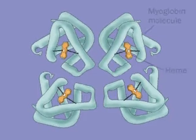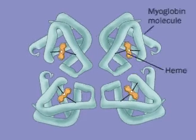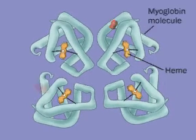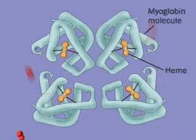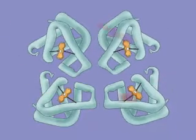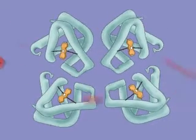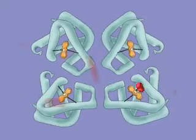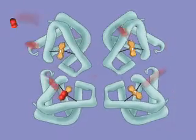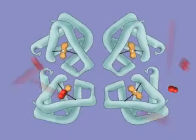Deoxymyoglobin in muscle has conformational mobility — it is not rigid. Oxygen entering muscle moves at random and may bind the heme group on a myoglobin molecule.